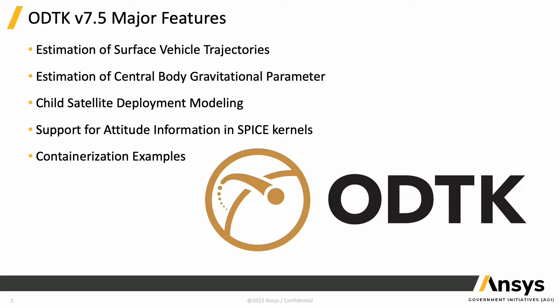We added estimation of the central body gravitational parameter. This is really meant for those missions where maybe we don't have a great idea of what the gravitational parameter of an object is that we're actually going to be orbiting — think of something like an asteroid, for example.